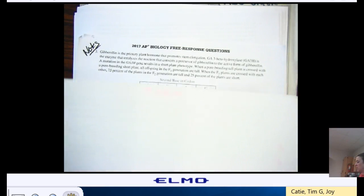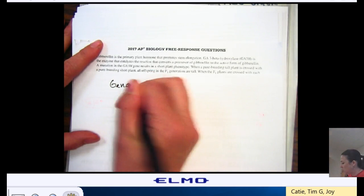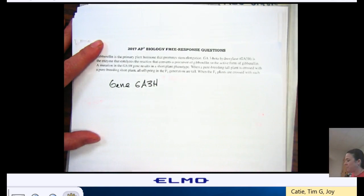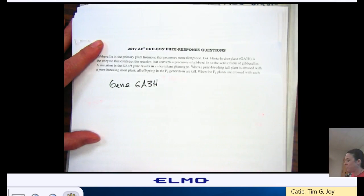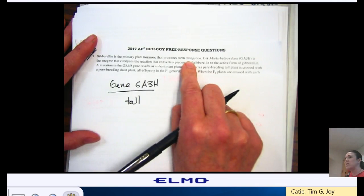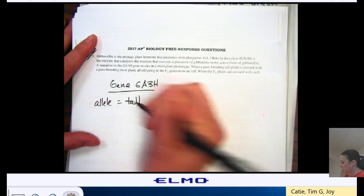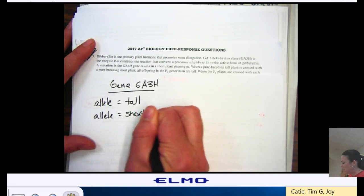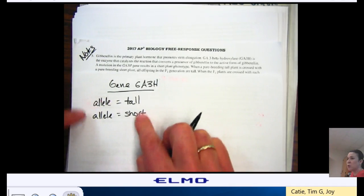So around here, if I'm trying to figure out what's going on, I have the gene for this GA3H. I have one gene that'll give me a tall phenotype because it gives me stem elongation. So one allele will give me something that's tall and the other allele will give me a phenotype that's short. But they're still the same gene, they're just different versions of it, and those are my alleles.